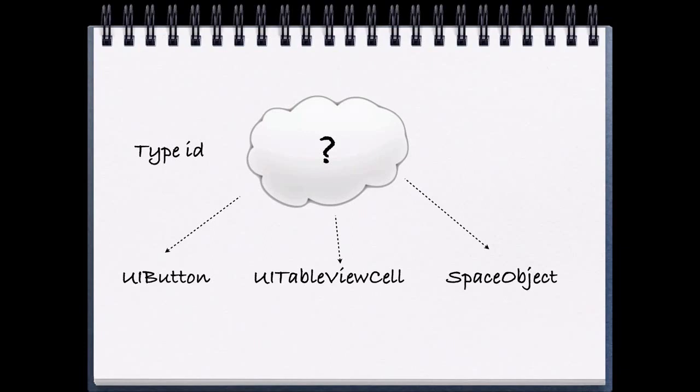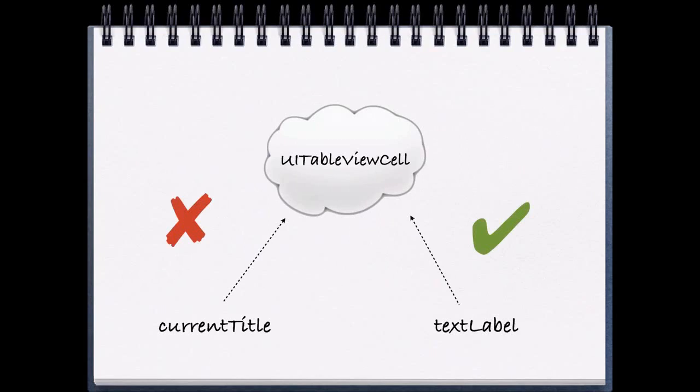One must be exceedingly careful when sending messages to type ID. For example, your application will crash if you try to send messages that an object or its superclass does not implement. So if you thought your sender was a UIButton and you tried to send the message currentTitle to it, that would be no good and your computer program would crash.